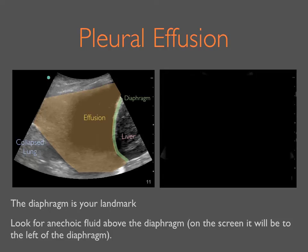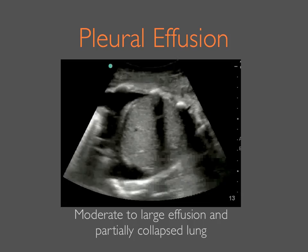Here we see a moderate to large effusion with partially collapsed lung. In this example, we see a hemithorax entirely filled with fluid and a completely collapsed lung floating inside. The diaphragm is not evident in this example.